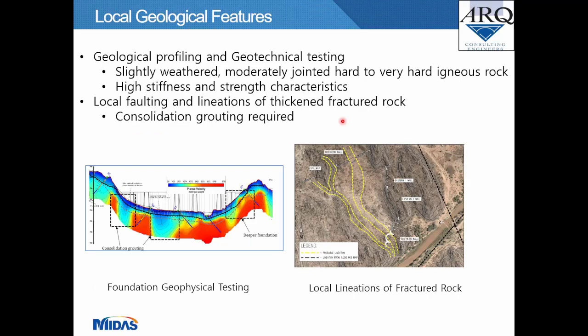Geological profiling and geotechnical testing on site revealed slightly weathered, moderately jointed, hard to very hard igneous rock with high stiffness and strength. Site testing also revealed local faulting and lineations of thickened fractured rock, for which consolidation grouting will be required. A geophysical testing image using P-wave velocity calculations shows foundation stiffness. Another image shows contours overlaid with local lineations of fractured rock running through the dam reservoir basin.